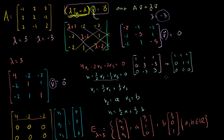Finally, replace the first row with the first row minus the second row: 1, 0, 2. So in reduced row echelon form we have: row 1 is (1, 0, 2), row 2 is (0, 1, minus 1), and row 3 is (0, 0, 0). Any v satisfying the original matrix equation also satisfies this reduced system.